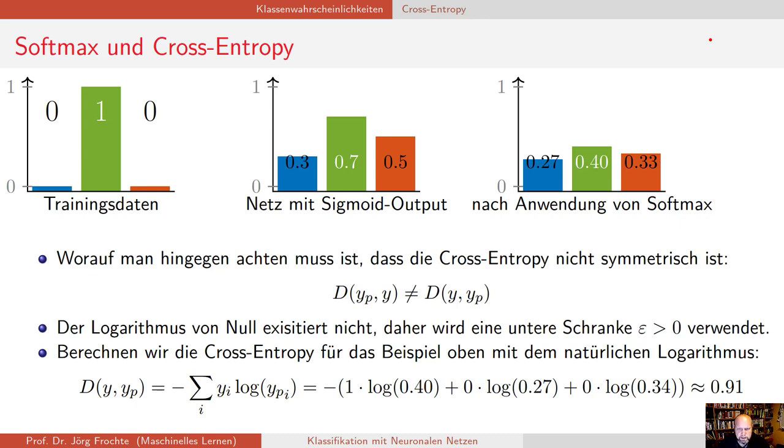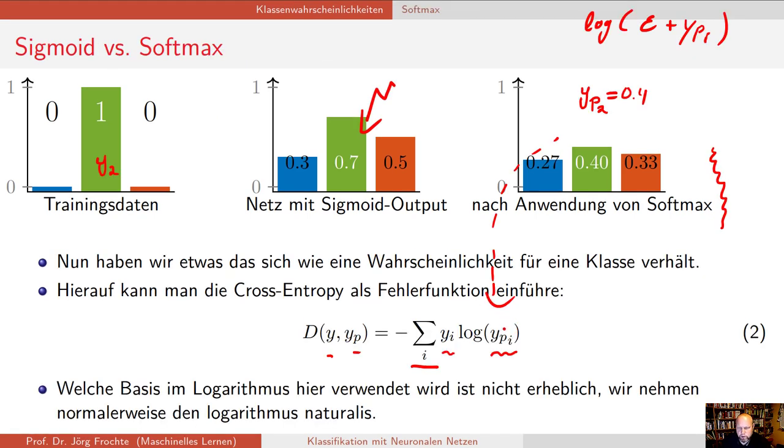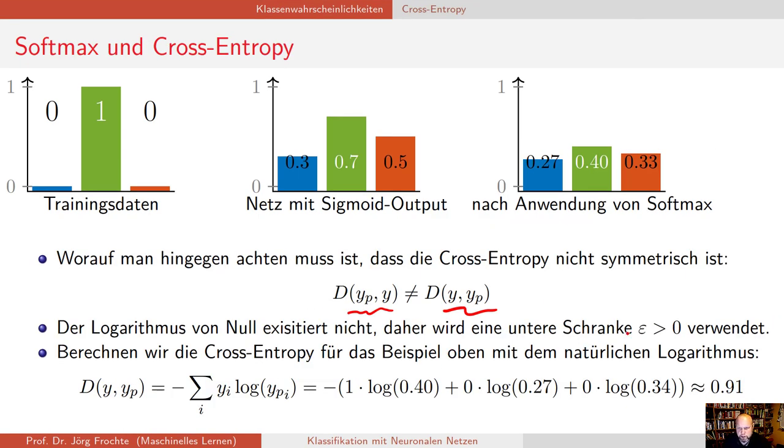Was nicht so wichtig ist, ist welcher Logarithmus das ist. Wir nehmen typischerweise den Logarithmus Naturalis. Wichtig ist, denken Sie daran, das ist ein Konstrukt mit einem Logarithmus, das heißt, das Ding ist nicht symmetrisch. Sie dürfen die Reihenfolge nicht vertauschen, Sie müssen darauf achten, dass hier wirklich hier im Logarithmus immer yp steht und davor immer y. Hier für das Beispiel oben umgerechnet, sieht man, dass der Output hier etwas ist wie 0.91. Bitte beachten Sie immer das Minuszeichen hier vor, das geht so gern unter.